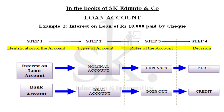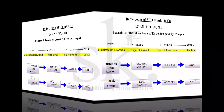Example two: interest on loan of rupees ten thousand paid by cheque. Since a loan has been taken, a certain amount of interest must be paid every month. We identify two account heads: interest on loan account and bank account. Interest on loan being paid is an expense, part of nominal account, and will be debited. Since payment is via cheque, the company's bank account balance goes down. Bank account, being a real account, is credited. Therefore, interest on loan account is debited and bank account is credited.